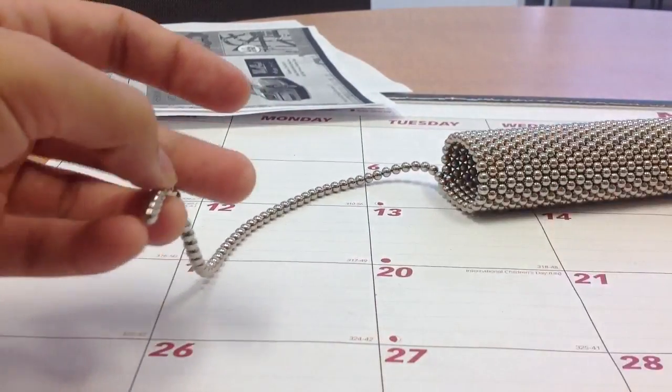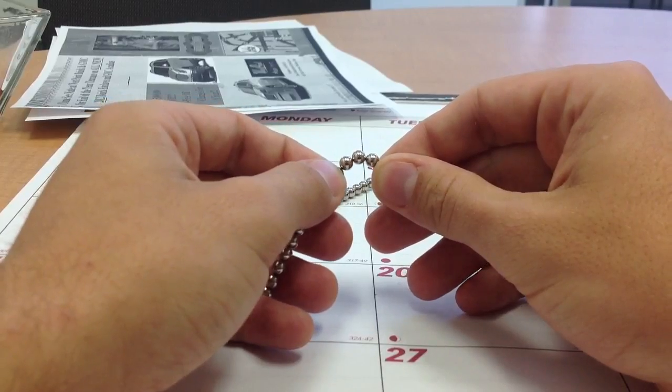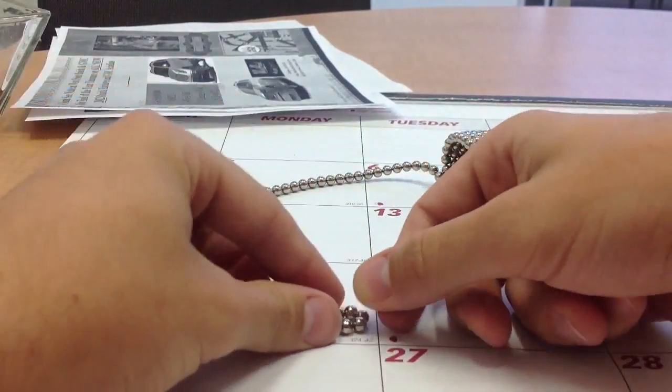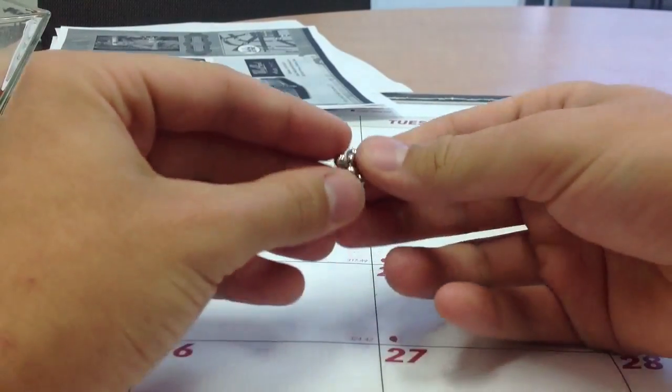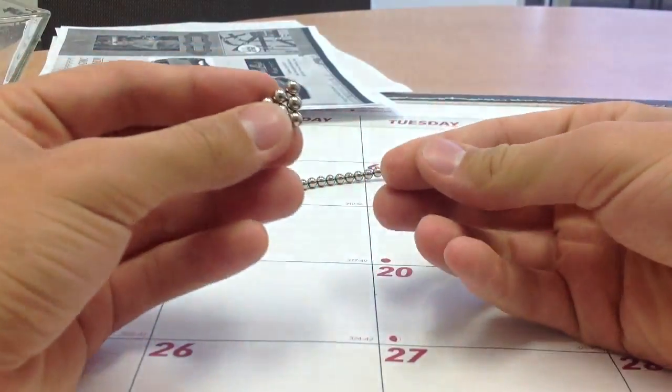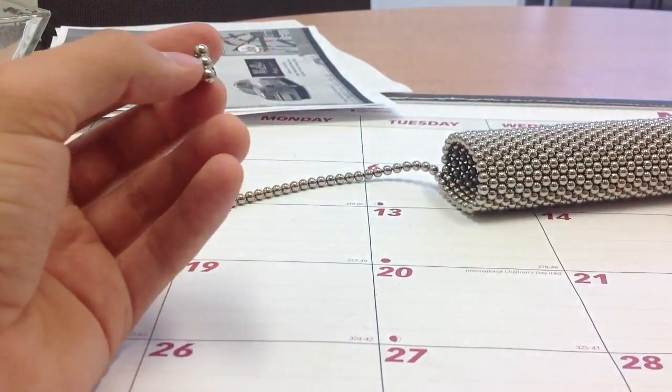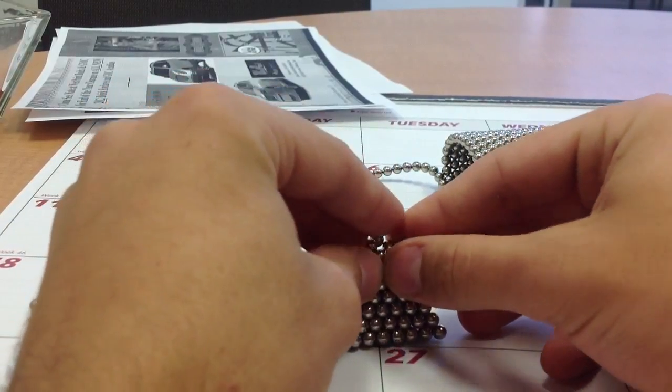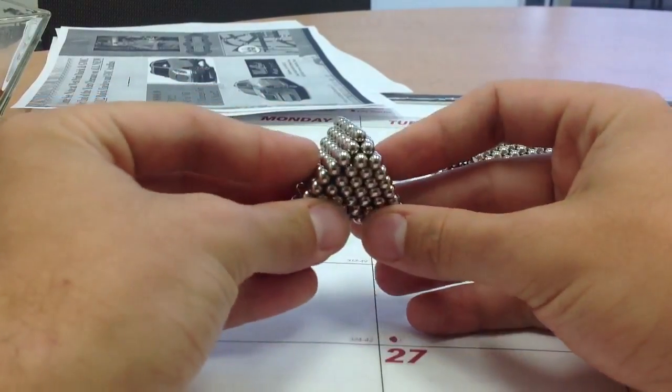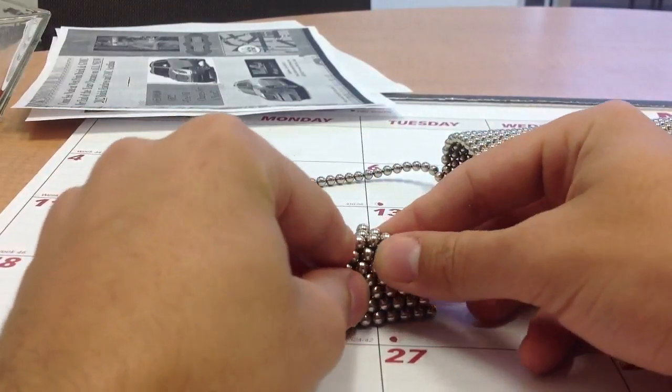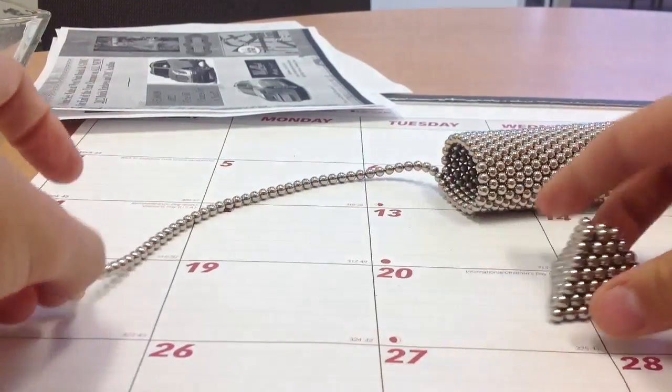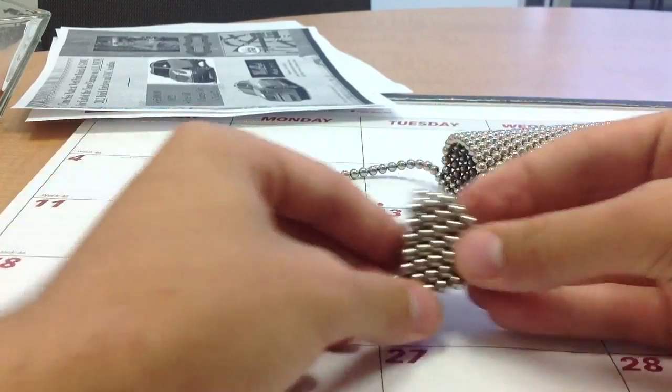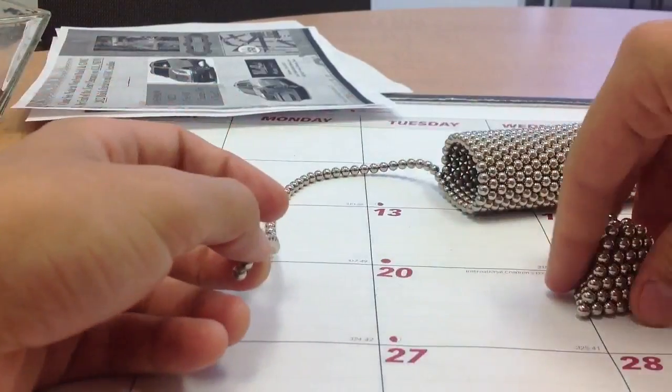And then we're going to take six dots again. Make another triangle. Like that. And set it on top like that. And then it's going to look a little messed up at this point like that. You see? But it will get fixed in just a minute. Don't worry about it. Go ahead and set it aside again.